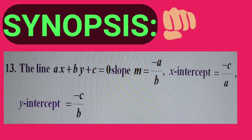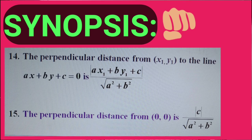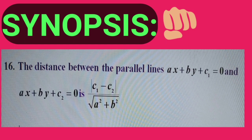For the line ax plus by plus c equals 0: slope m equals minus a/b, x-intercept equals minus c/a, y-intercept equals minus c/b. The perpendicular distance from (x1, y1) to the line ax plus by plus c equals 0 is |ax1 plus by1 plus c| divided by root(a² plus b²). The distance from the origin is |c| divided by root(a² plus b²). The distance between parallel lines ax plus by plus c1 equals 0 and ax plus by plus c2 equals 0 is |c1 minus c2| divided by root(a² plus b²).